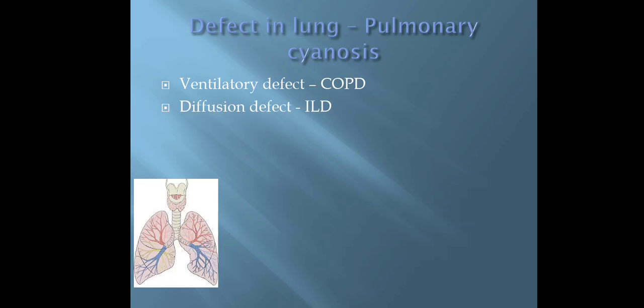The next defect is in the lung, called pulmonary cyanosis. It can be a ventilatory defect, for example in case of COPD, or a diffusion defect in case of interstitial lung disease.